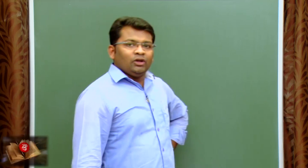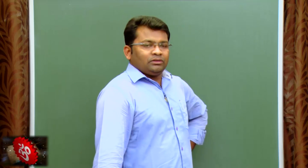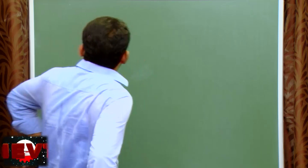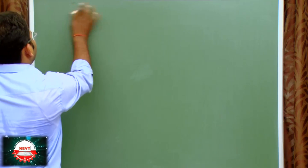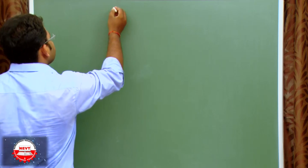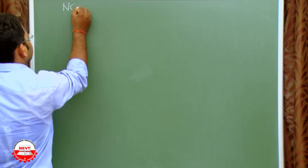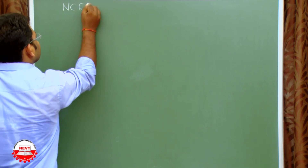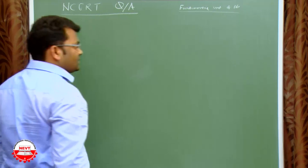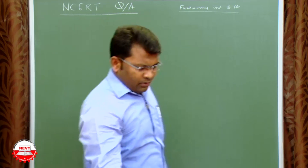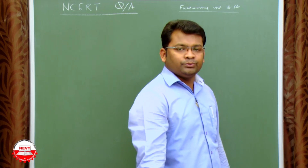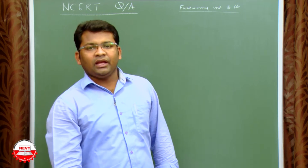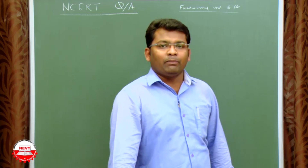We'll discuss the questions from your activity book, the first chapter: The Fundamental Unit of Life. Question one: who discovered the cell and how? The cell was discovered by Robert Hooke.